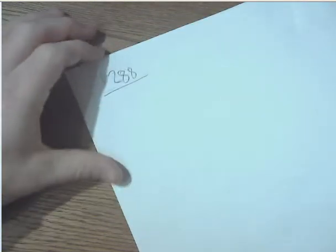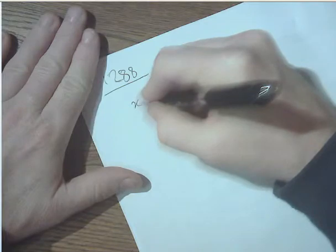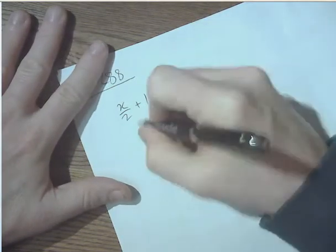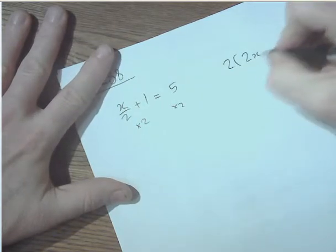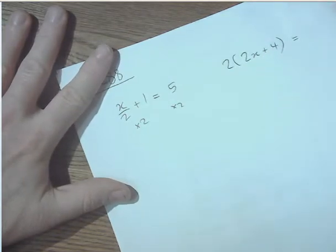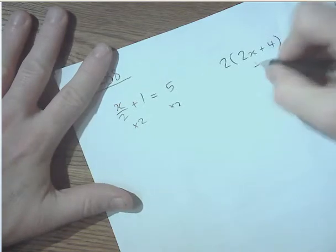So, for example, if you have this and you times both sides by 2. Or if you have this and you divide both sides by 2.